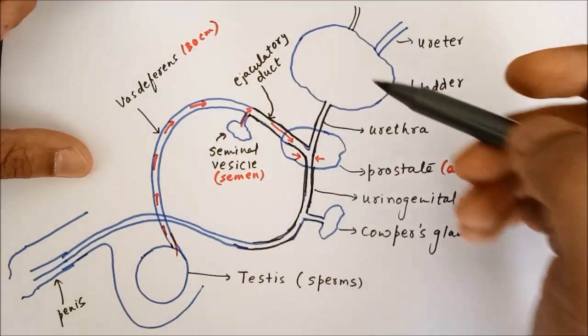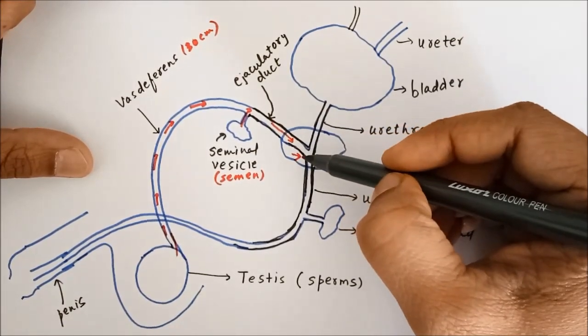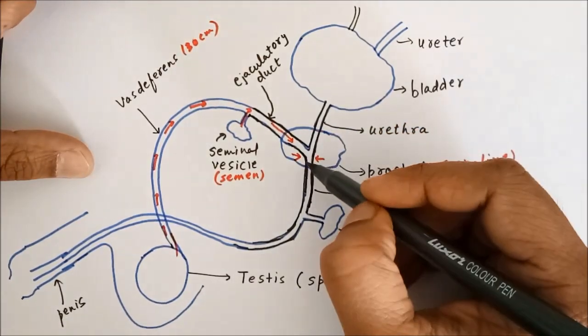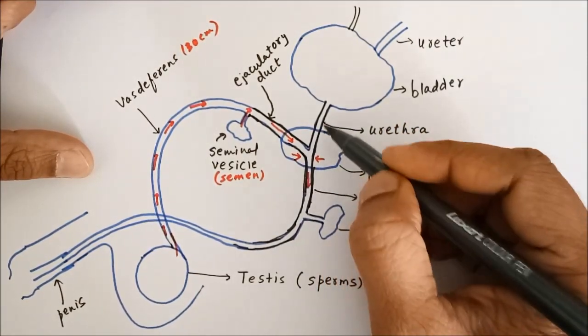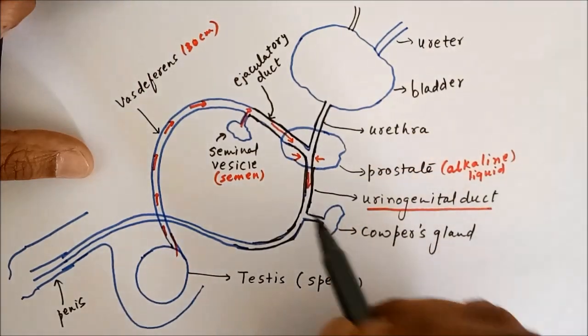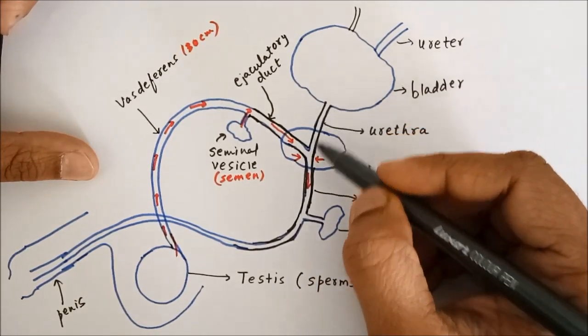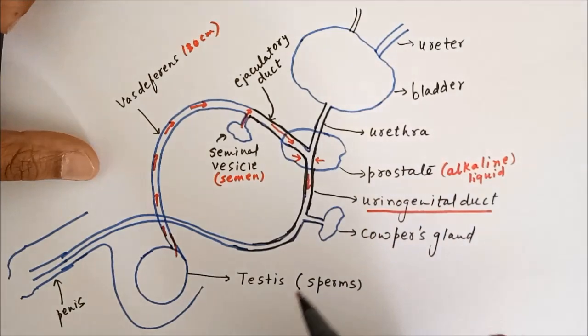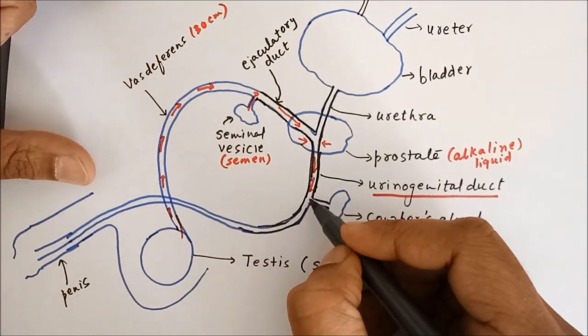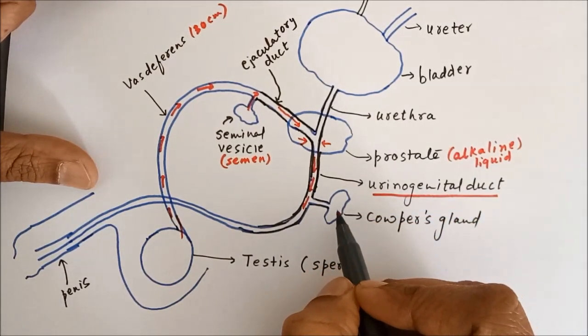And now what happens is this urethra and ejaculatory duct, they join together inside the prostate gland. And the common tube that carries both urine and sperm is called urinogenital tract. So this urinogenital tract is just the extension of the urethra.